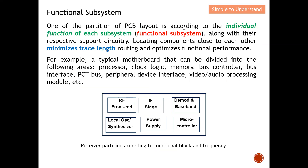One approach to PCB layout partitioning is according to the individual function of each subsystem, along with its respective support circuitry — for example, the power needed to support that circuitry. All related components are grouped closely together. When we locate all components close to each other, we can minimize the trace length because they are nearby, so we don't need to run traces all over the board. This also optimizes functional performance.